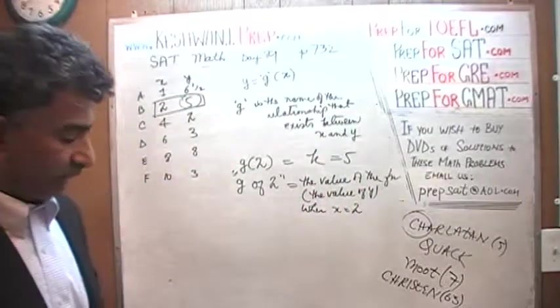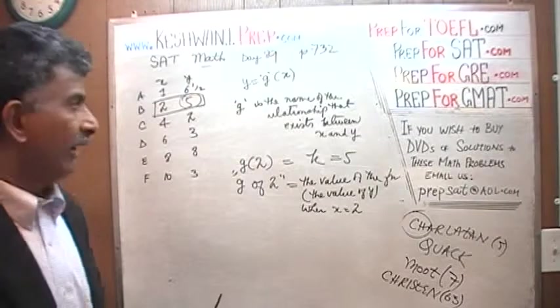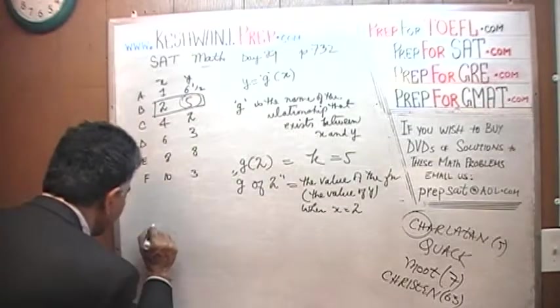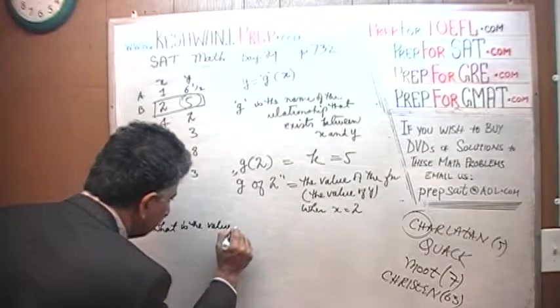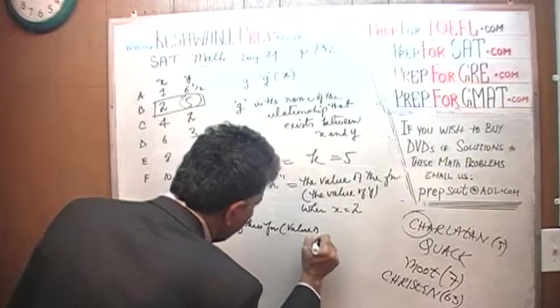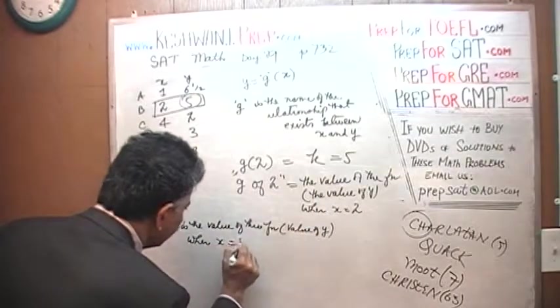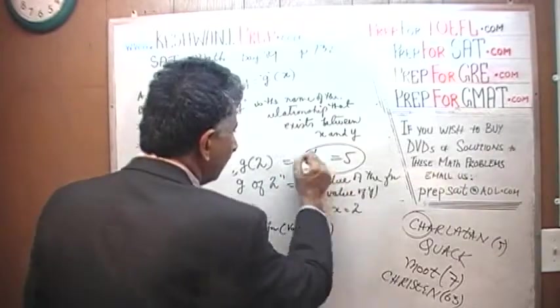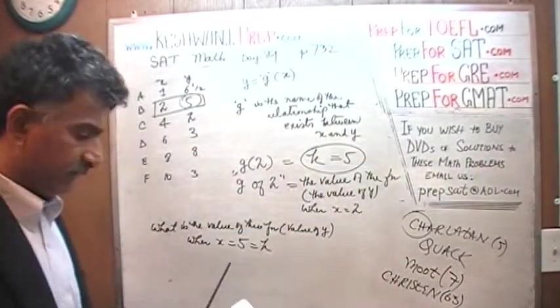The question simply is, what is the value of the function when X equals 5? The question is, what is the value of this function, which is same as saying value of Y when X equals 5? Because we just found that that's the value of K. Right here, that is the value of K. That's what they are saying.